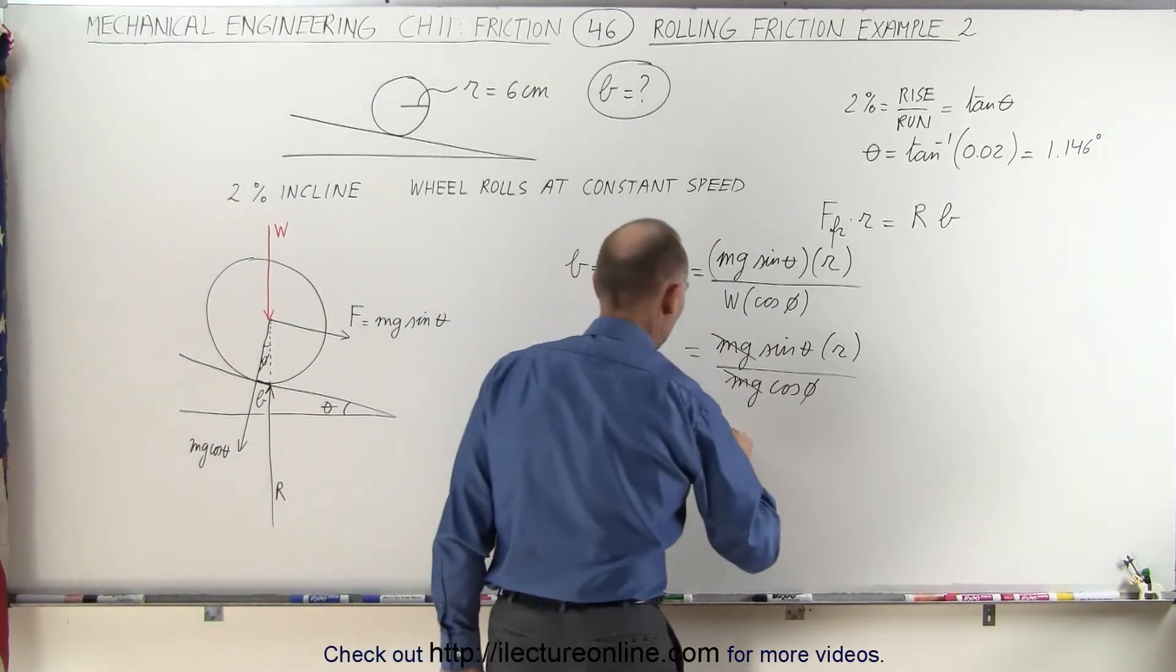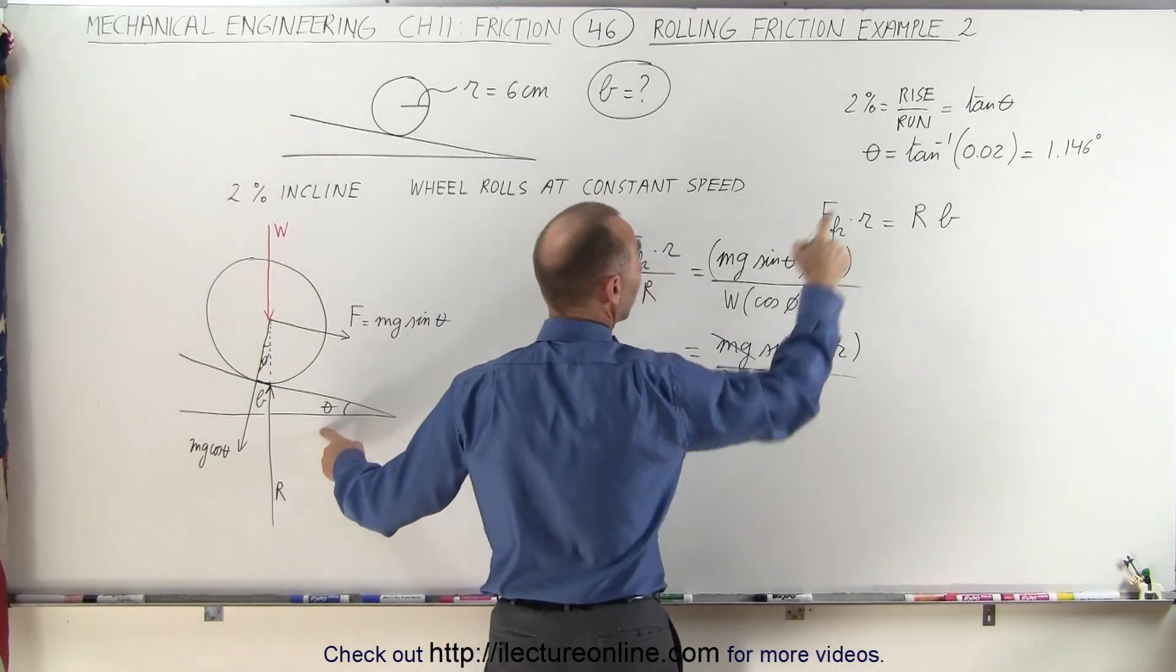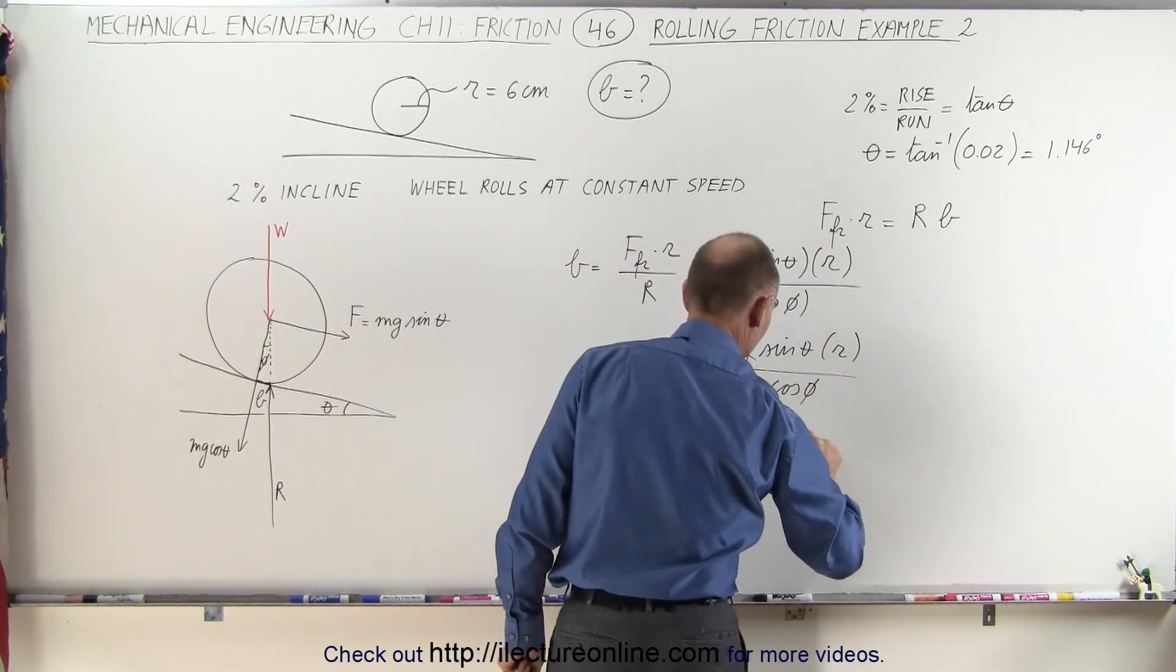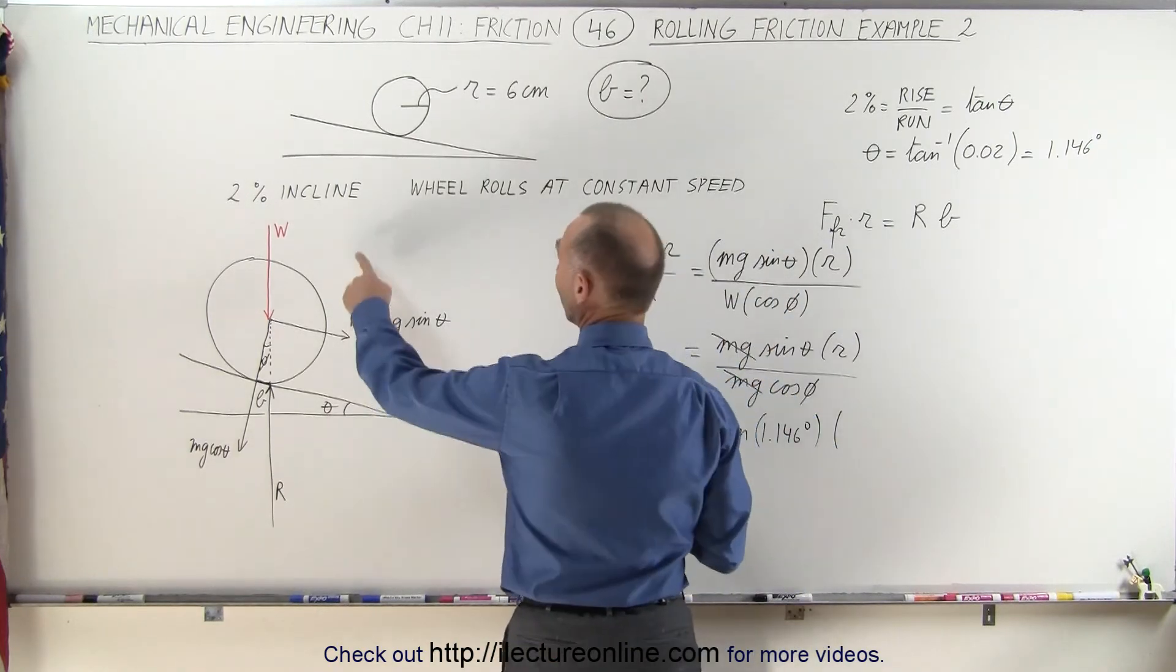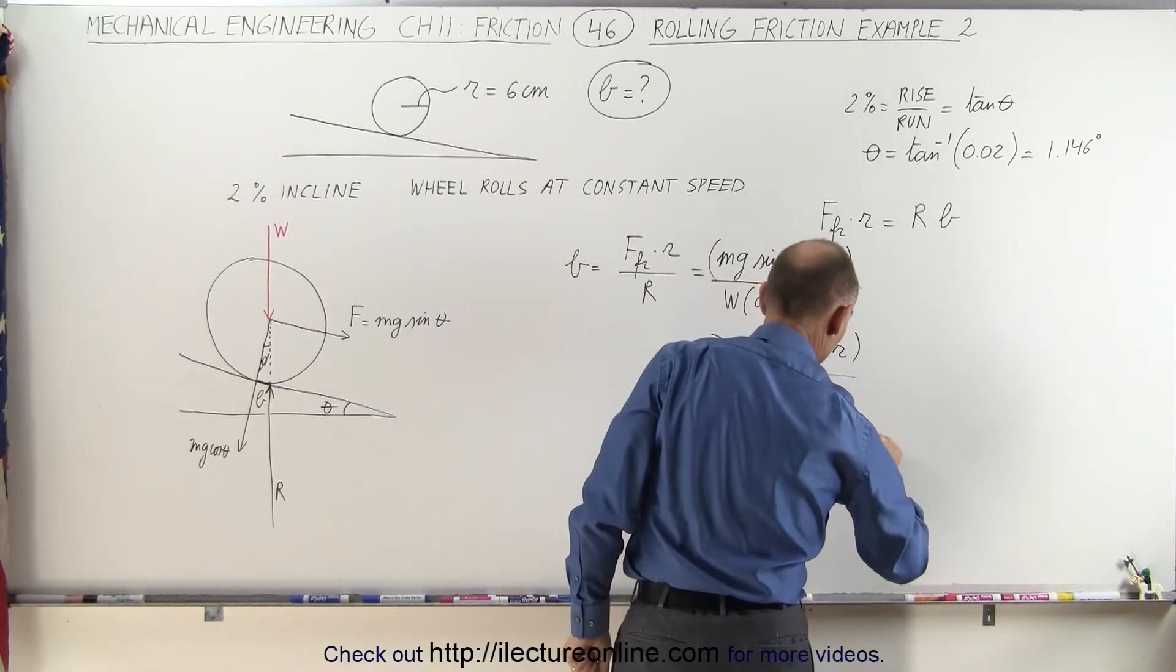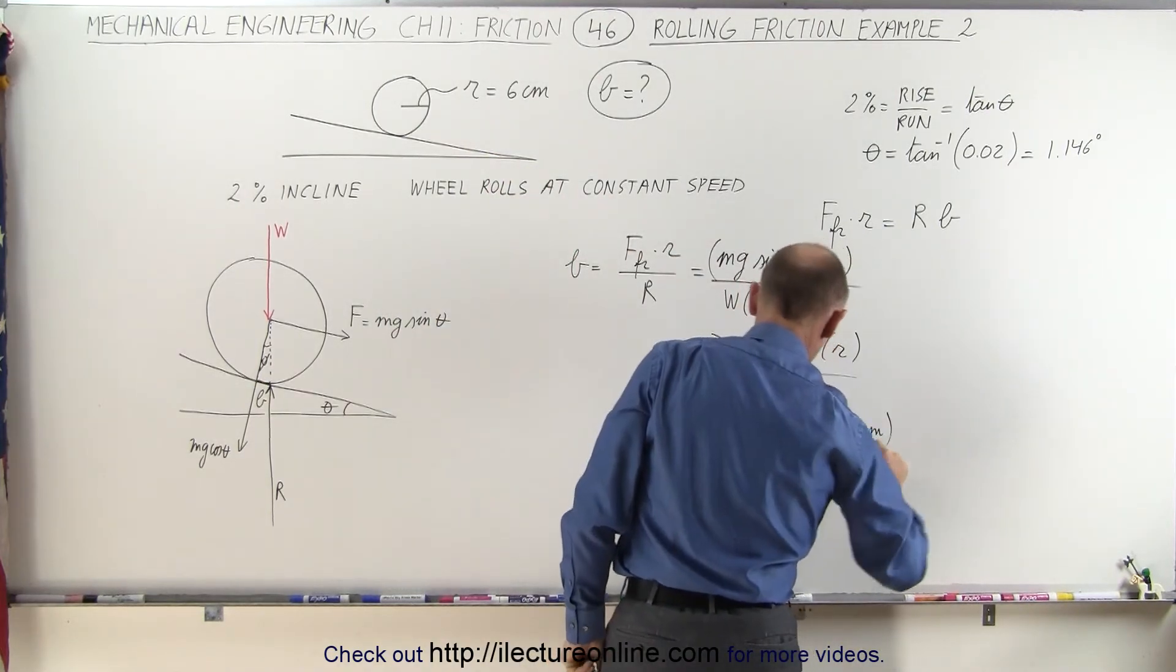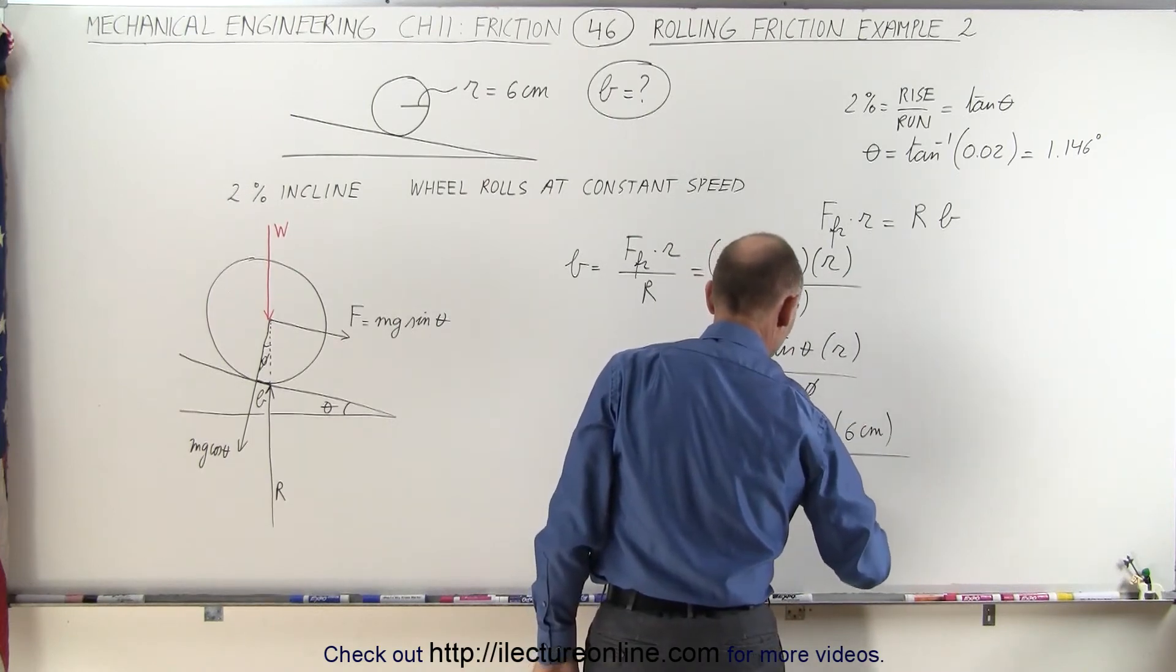So this would be equal to the sine of theta. Now theta is known, we got that to be 1.146 degrees, and then we multiply it times the radius of the wheel, which is 6 centimeters. We multiply that times 6 centimeters, and we divide that by the cosine of phi.